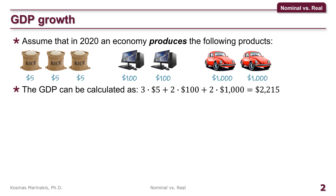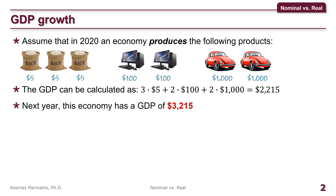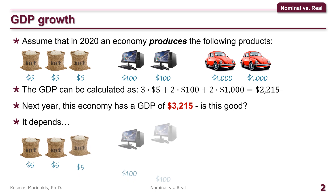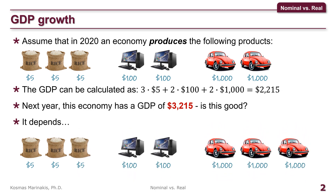Let's assume now that someone tells you that this economy next year has a GDP of $3,215 — $1,000 more. That's great, right? The economy will be wealthier now. Or maybe not. Well, it depends. If next year the production looks like that, the economy will definitely be wealthier. It has produced an additional car, so this is indeed great.